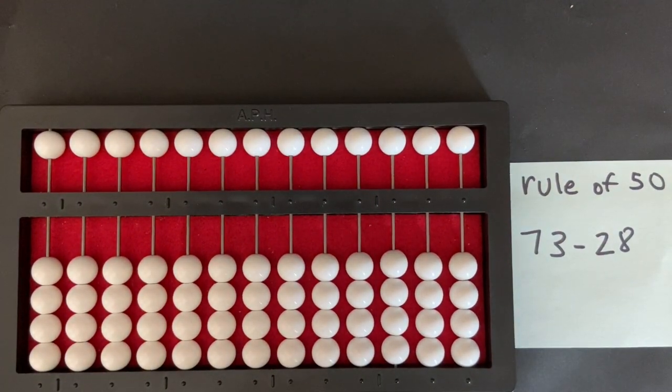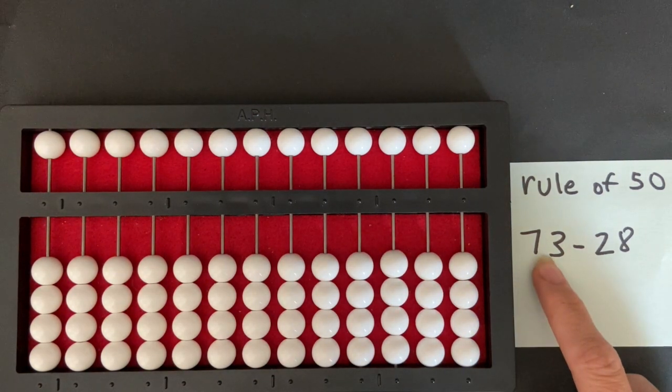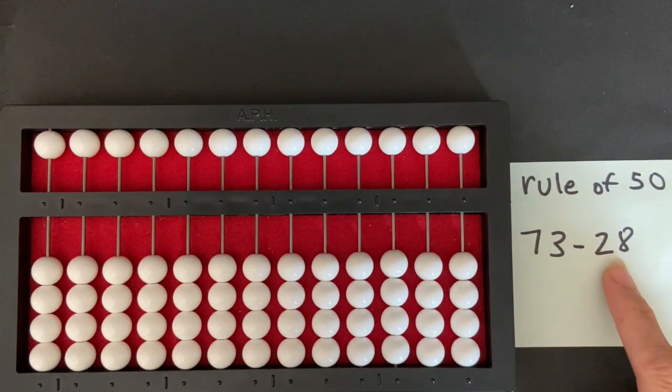Now I'm going to use my rule of 50 in the counting method, also known as a 49-50 exchange, for subtraction. What I'm going to do is set my minuend, which is 73. Our problem here is 73 minus 28. 73 is the minuend and 28 is the subtrahend.